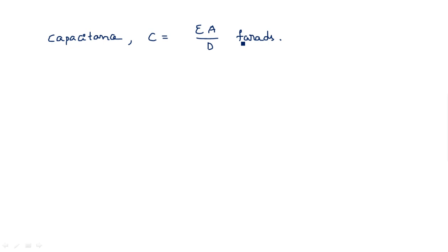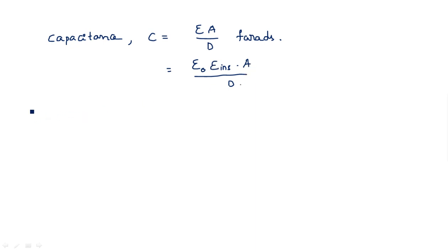C can be expressed as epsilon naught times epsilon-insulator times A divided by d. This is the generalized formula for capacitance anywhere. So C equals epsilon naught times epsilon-insulator times A divided by d. Here, d is the thickness of the dielectric material whatever we are using inside.